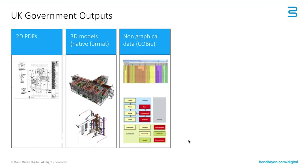The government had three very clear deliverables back in 2011-2012 when they announced they wanted to do BIM. Those three deliverables needed for government projects were: 2D PDFs, which everybody completely understands; 3D models in whatever authoring software you are using — primarily ARCHICAD for most people on this call, so that's your ARCHICAD native model — and this thing called non-graphical data, or COBie, which is the mysterious part of the government outputs for many.